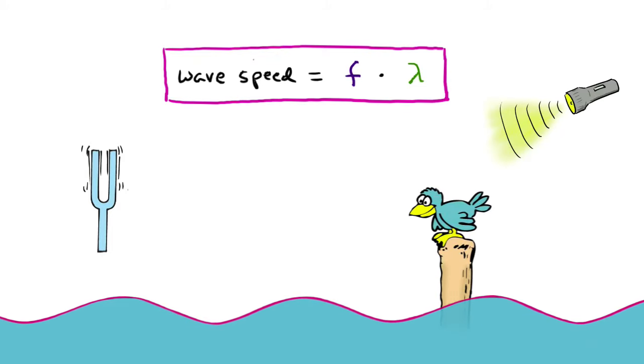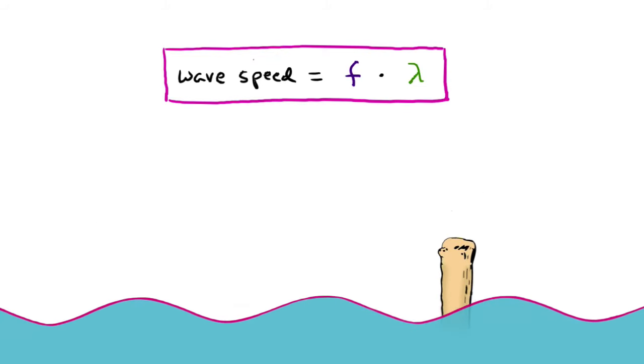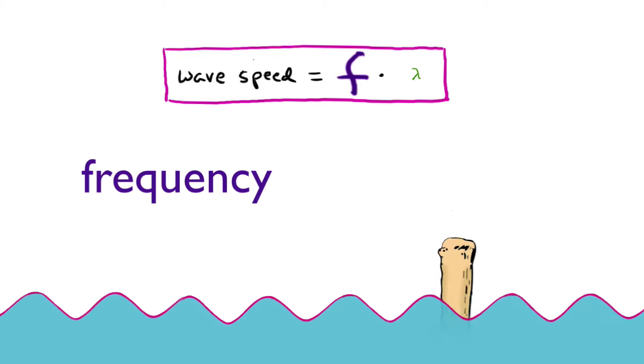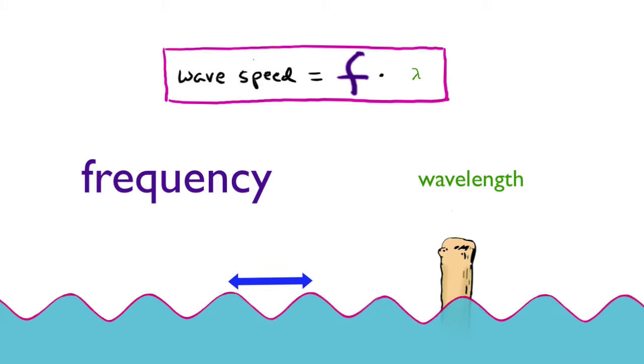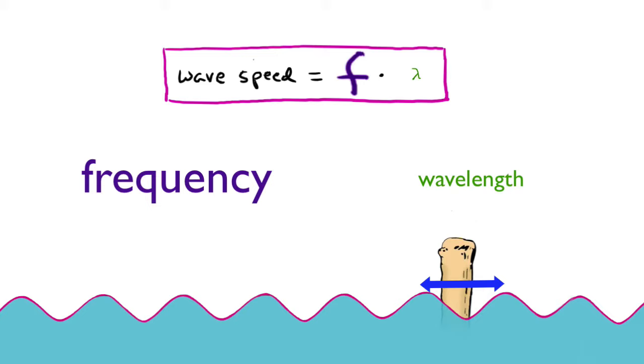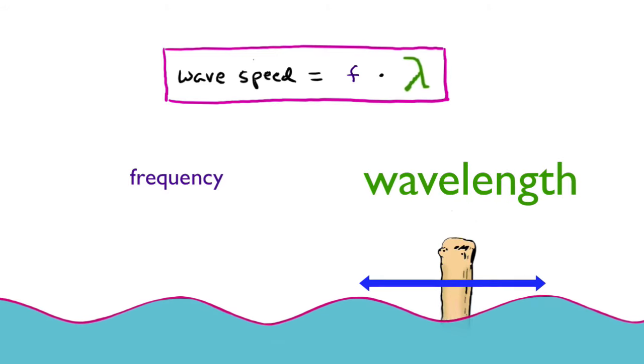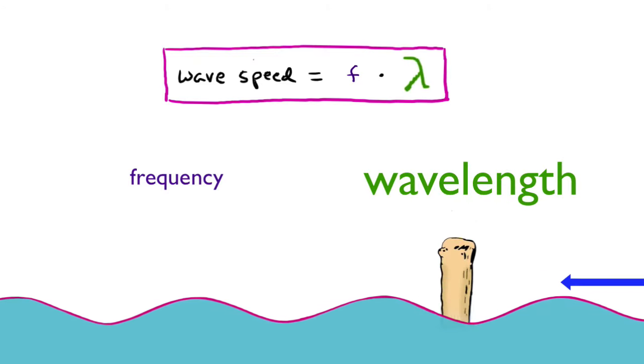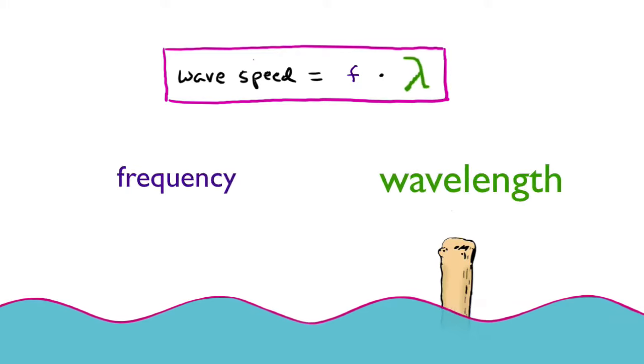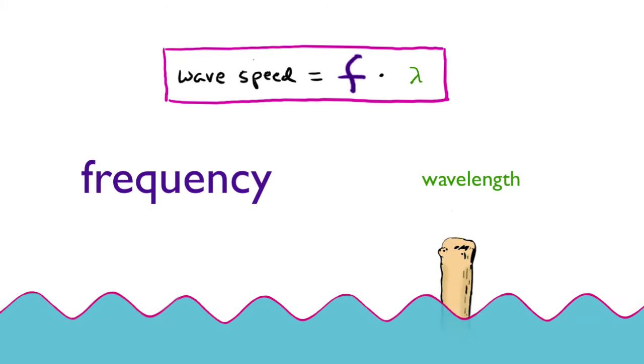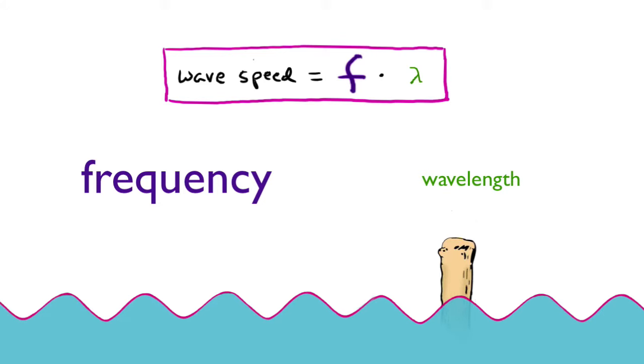But what's fascinating is that if you have a higher frequency, that necessarily means a shorter wavelength, and a lower frequency necessarily means a longer wavelength. Frequency and wavelength are inversely proportional to each other. You can't make one bigger without the other getting smaller.